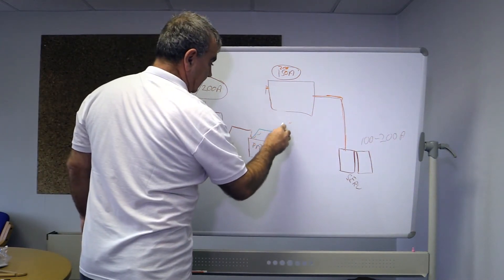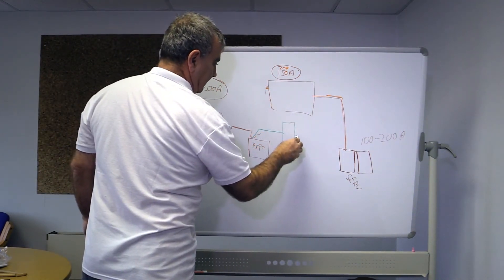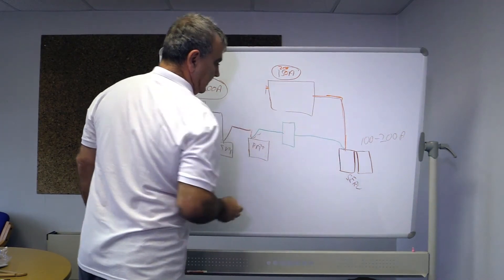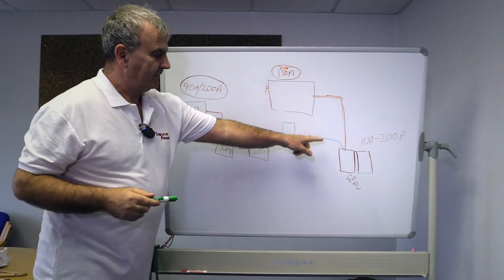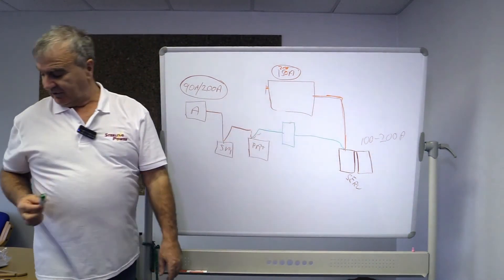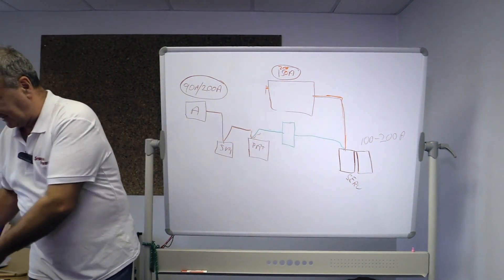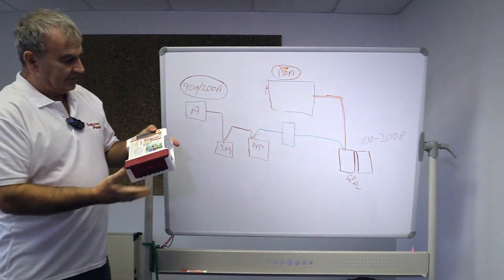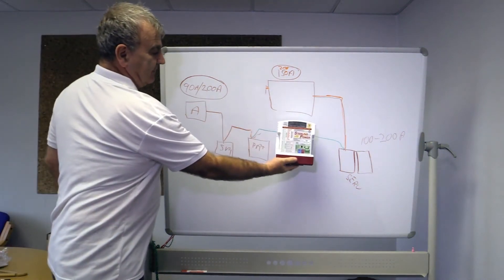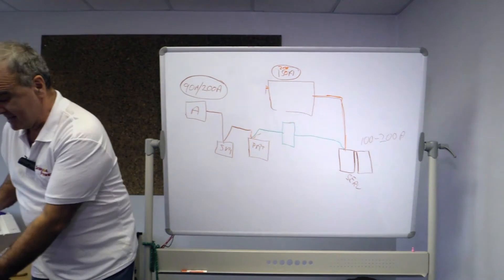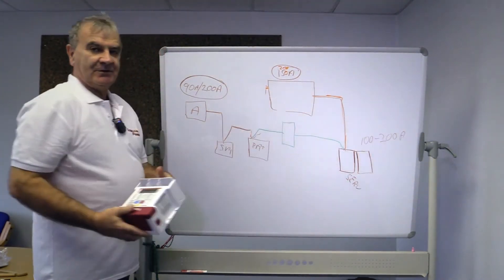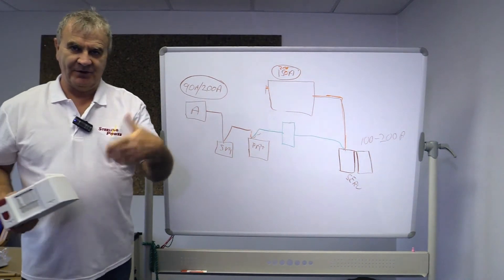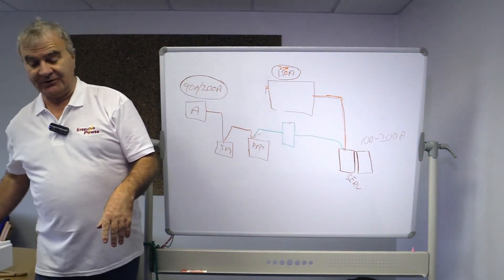We do a product called a battery to battery charger that fits here, and then from here we go to the domestic battery bank. So this offers a new route to the domestic battery bank with a four stage battery to battery charger in it. So they look something like this here. That would be a 30 amp version and this here would be a 60 amp version.